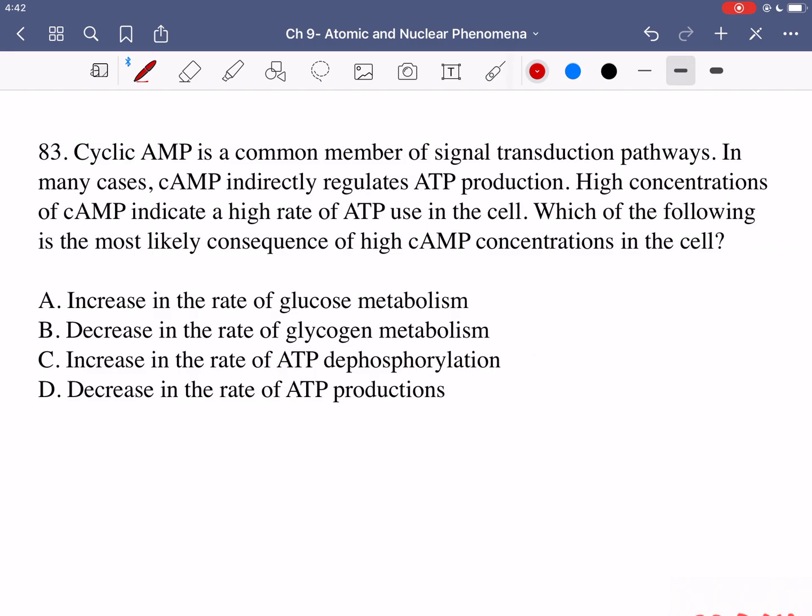In question 83 it says cyclic AMP is a common member of signal transduction pathways. In many cases cAMP indirectly regulates ATP production. High concentrations of cAMP indicate a high rate of ATP use in the cell. Which of the following is the most likely consequence of high cAMP concentrations in the cell? So if we have high cAMP and high rate of ATP use, we're using a lot of ATP. One of these options has to relate to a high rate of ATP use meaning that we have a cell that is at a low energy level. So which consequence is going to occur because we have a low energy level?